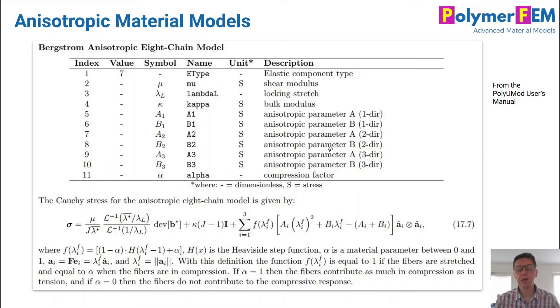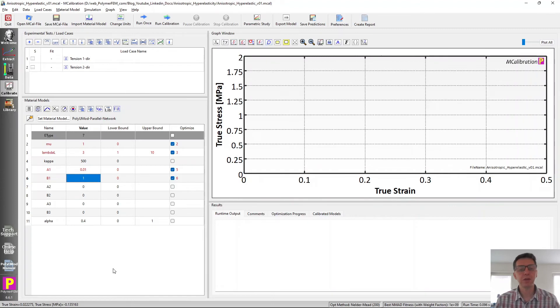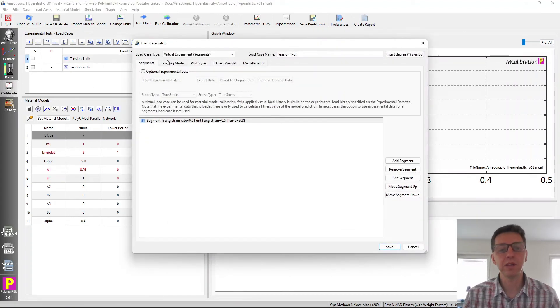So let's take a look in MCalibration and how this works. I have an MCalibration window here. I have defined two different tension directions. If I double click on this, it's a virtual experiment. It's going to demonstrate what happens.